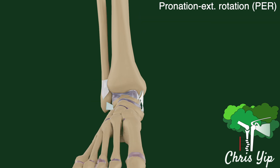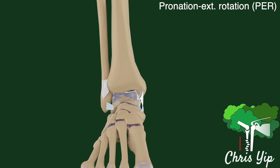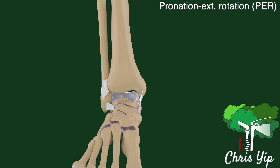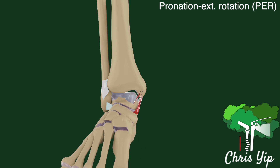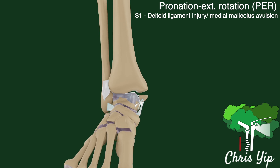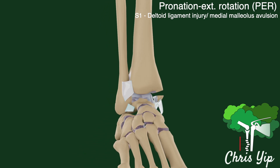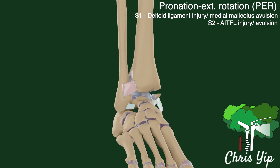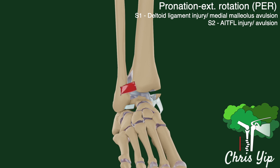The fourth category of injuries are pronation external rotation injuries, starting with the foot in pronation, with a deforming force that leads to external rotation. The first stage involves an injury to the deltoid ligament or a medial malleolus avulsion. The second stage involves an injury to the anterior inferior tibial fibular ligament.